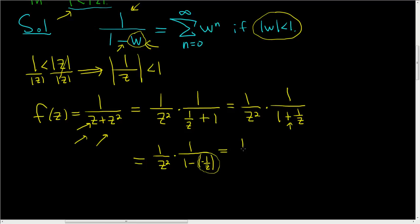So the 1 over z squared, it hangs out, there it is, times the infinite sum as n runs from 0 to infinity, and instead of w to the nth power, it's going to be negative 1 over z to the nth power. So this is negative 1 over z to the nth power.